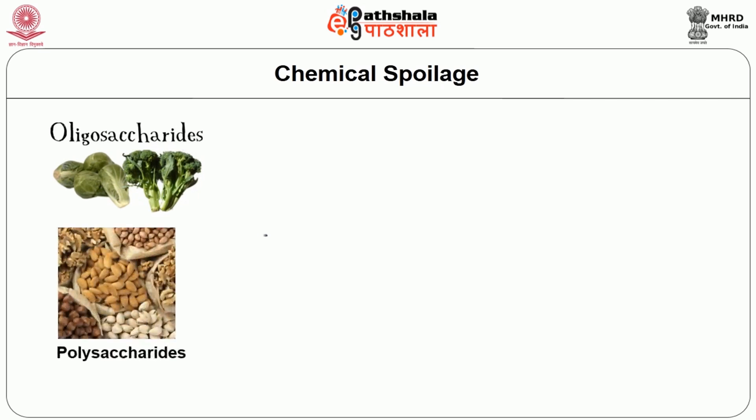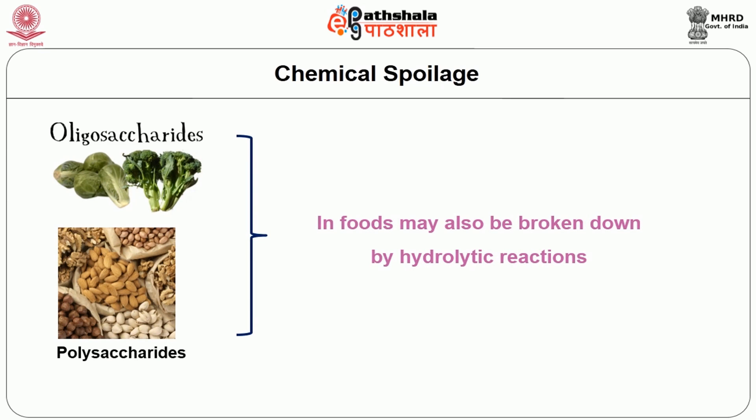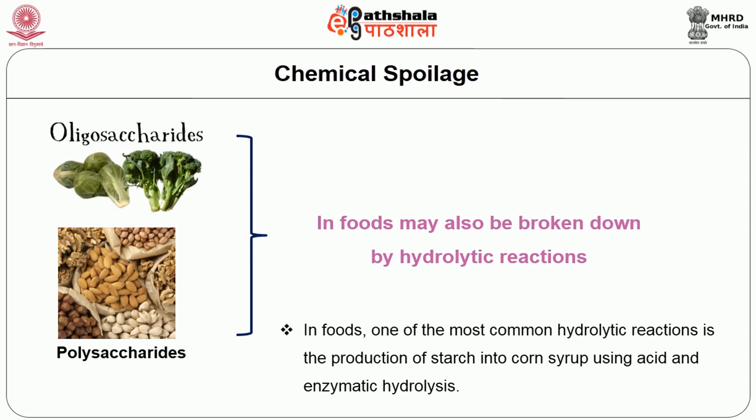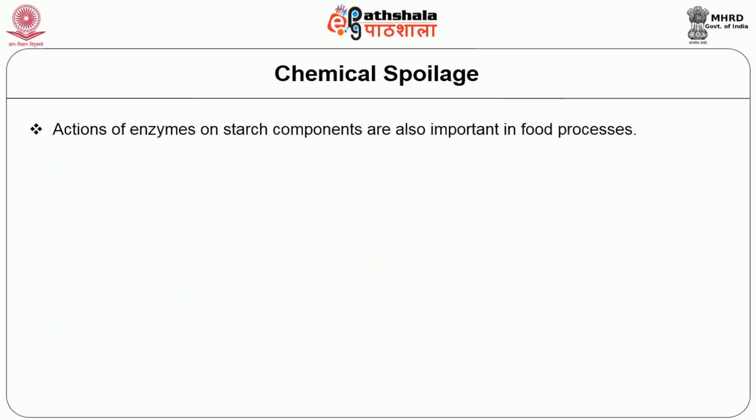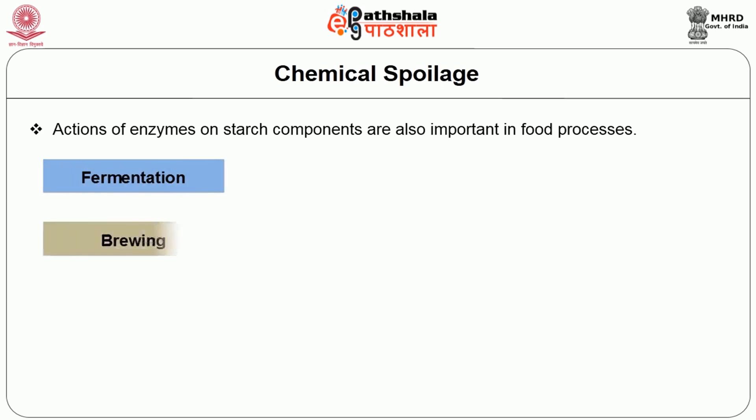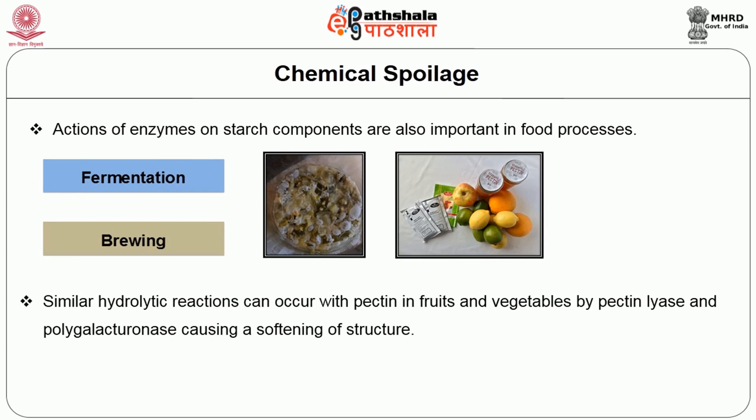Oligosaccharides and polysaccharides in foods may also be broken down by hydrolytic reactions. One of the most common hydrolytic reactions in foods is the production of starch into corn syrup using acids and enzymatic hydrolysis. The action of enzymes on starch components is also important in food processes such as fermentation and baking. Similar hydrolytic reactions can occur with pectin in fruit and vegetables by pectinase and polygalacturonase, causing a softening of structure.